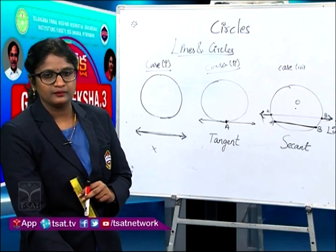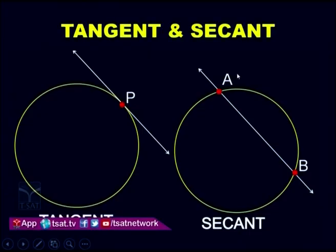A tangent is a line which touches a circle at only one point. This point is called the point of contact, because this is where both are touching each other. A secant is a line which touches the circle at two different points — it not only touches the circle, it cuts the circle. A and B are the two different points of intersection.